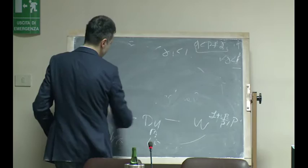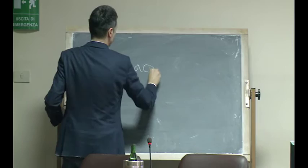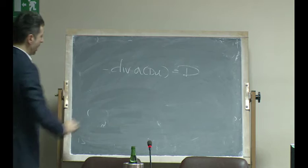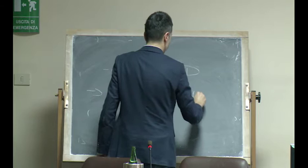Up to now we have treated essentially the so-called energy range. The energy range is the one I mentioned yesterday: we have an operator equal to something which is a distribution, and the energy range is the one for which it belongs to the dual of the natural energy space.